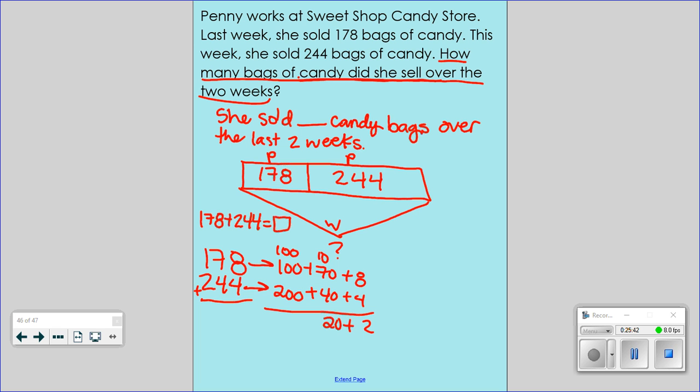Adding up my hundreds. Hundred plus hundred plus two hundred. Four hundred. Do I have enough to make a trade? Is four hundred a group of tens? No. Do I have enough to make a trade? No. Let's put that back into standard form. Put that number back in standard form for me. Four hundred and twenty-two.